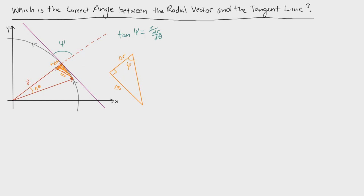Looking at this picture, this is our right triangle right here. We can say that this angle right here is the same as this angle right here, and then we can use the idea of vertical angles to prove that this angle is the correct angle that we're looking at.